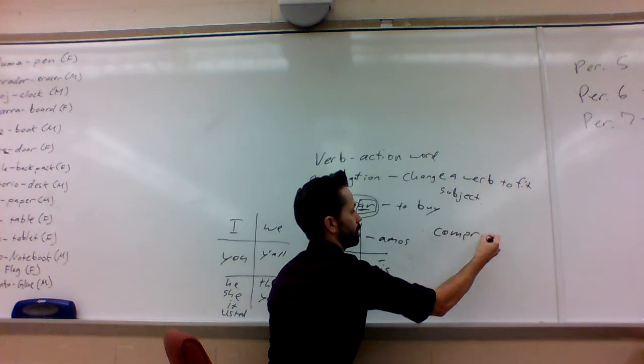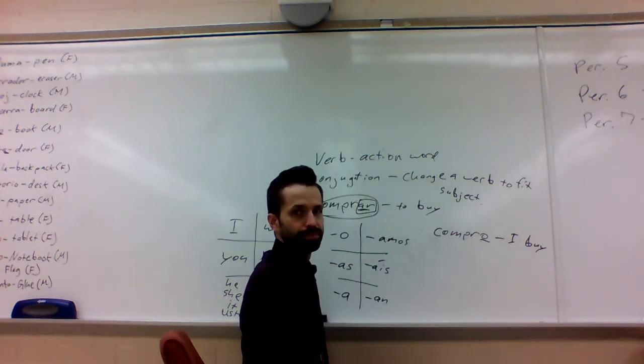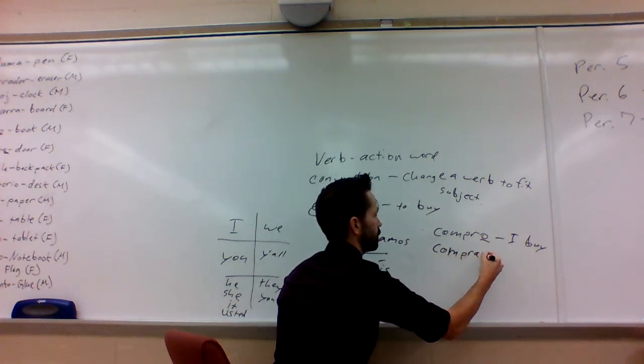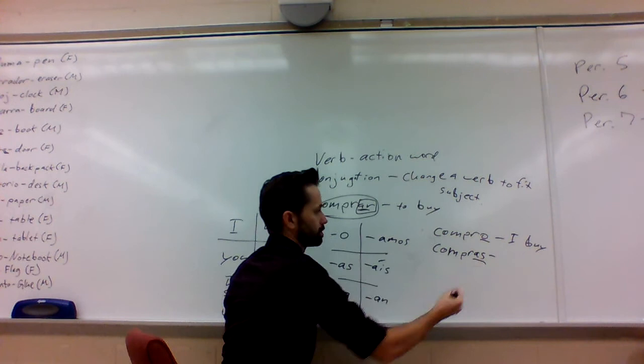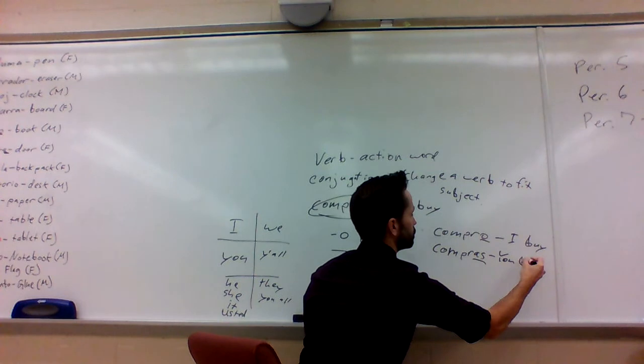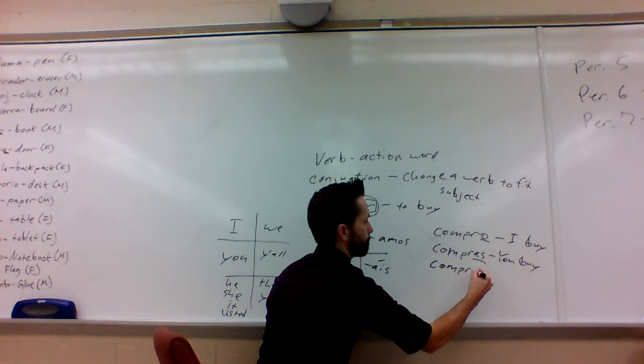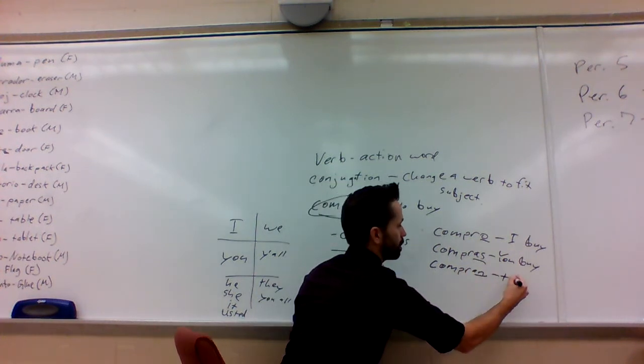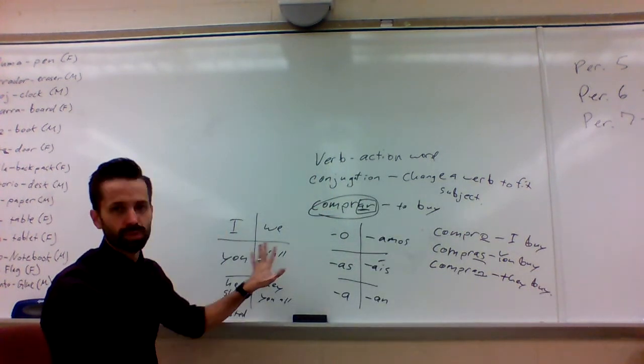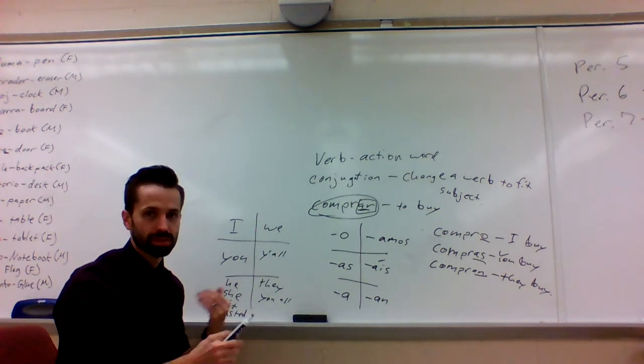If I take the AR off and I put an O, this means 'I buy.' If I wrote it with this one, with AS, Compras, AS means that we're talking about you. You're the one doing the buying, so this is 'you buy.' Any of these will change. If I put AN, Compran, AN, that means 'they buy.' So you need to use these together to make your conjugations, to change those to fit in the sentence.